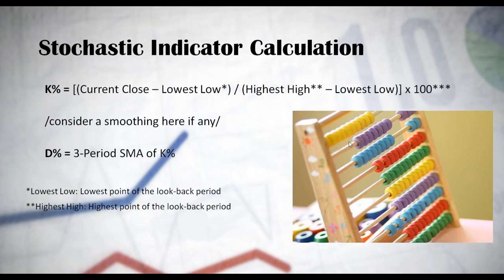Then highest high is exactly the same thing but opposite. Highest high is the highest point of the lookback period. In most cases it is the upper candle wick of a respective period on the chart.